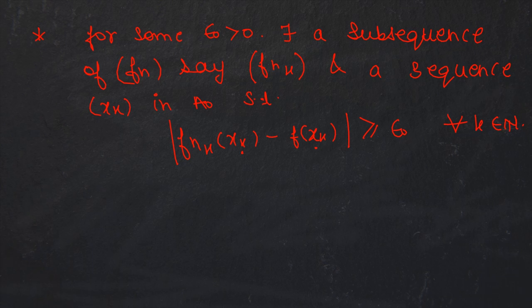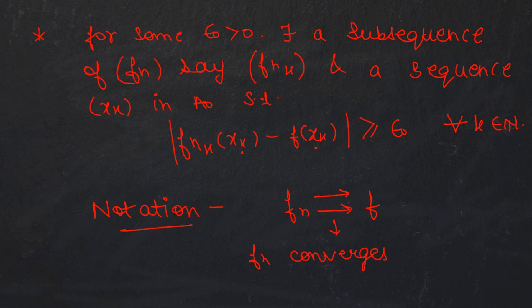There is a notation we often use for uniform convergence. If fn converges to f uniformly, we denote it by a double arrow, meaning fn converges to f uniformly. Let's see an easy example to illustrate the difference between uniform convergence and pointwise convergence.